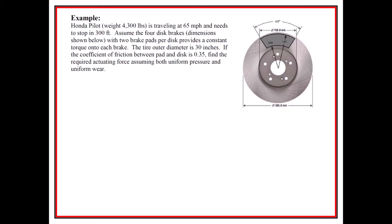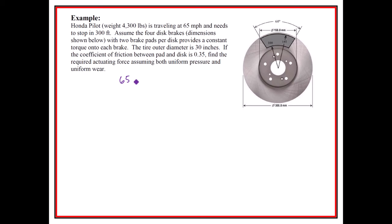We have an example for disc brakes from class 16. I tried to make this a practical problem, so I picked a Honda Pilot traveling at 65 miles per hour that needs to stop in 300 feet — about a football field. We need to find the actuating force required for both uniform pressure and uniform wear. I measured my tires at 30 inches diameter and used a coefficient of friction of 0.35 from the textbook table.